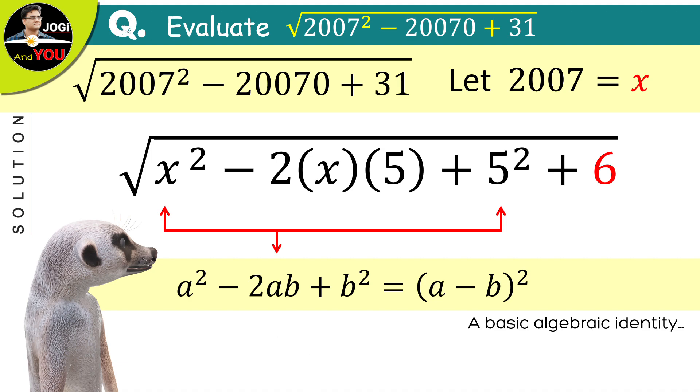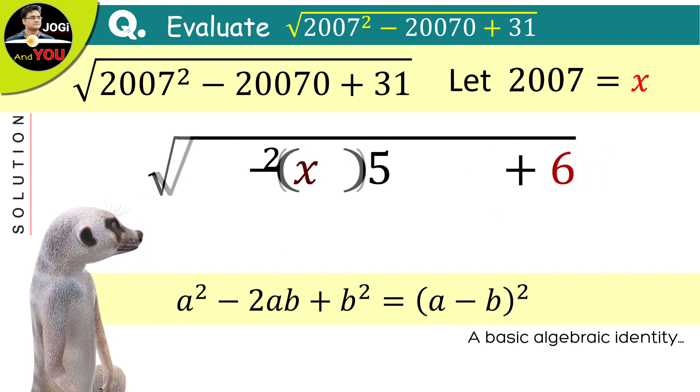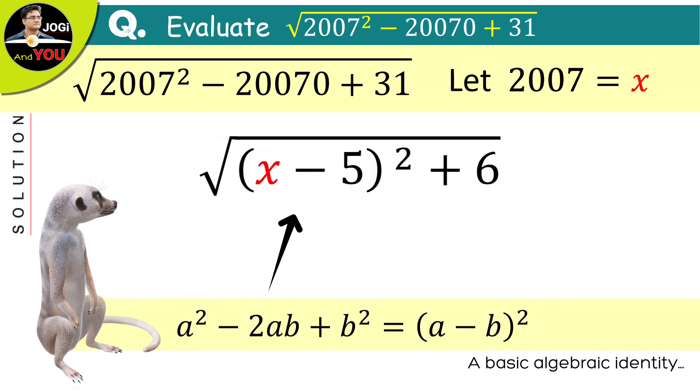Well then, let us apply it and we have this. x minus 5 the whole square plus 6 under the radical symbol.